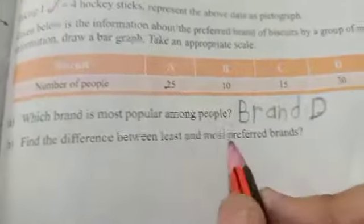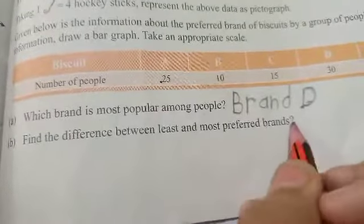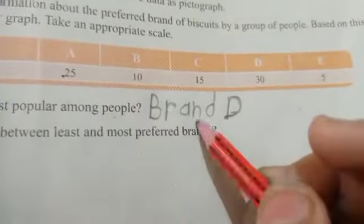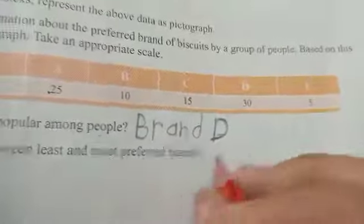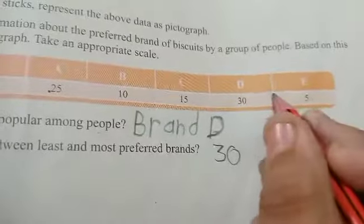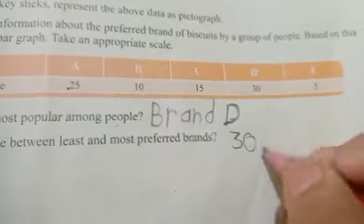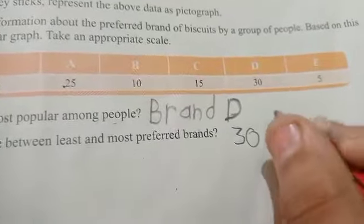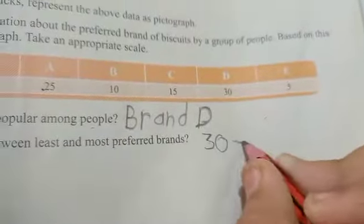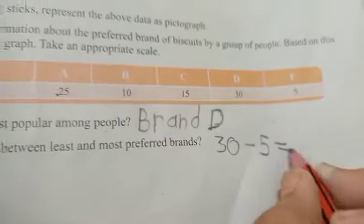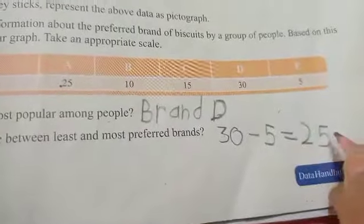Next, the difference between the least and most preferred brands. This means we find the range. The range is the difference between the biggest and smallest values. So our answer will be the range of those numbers.